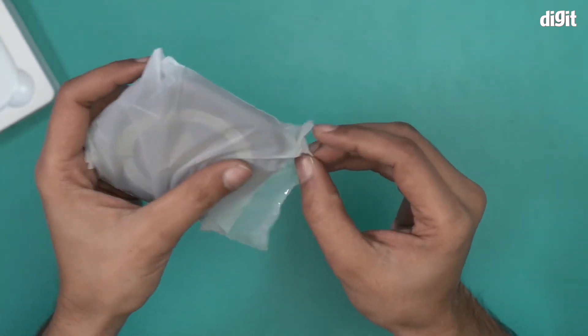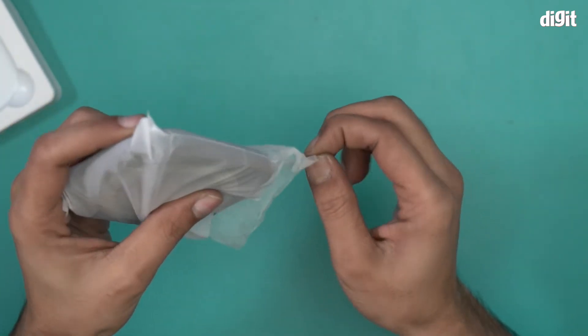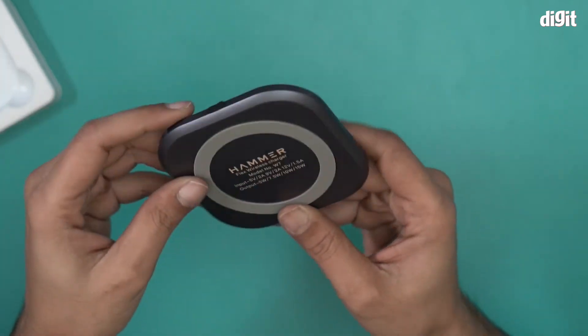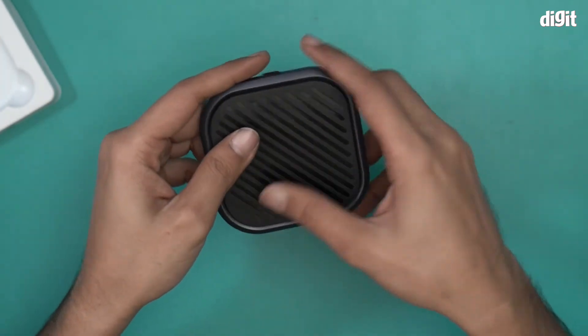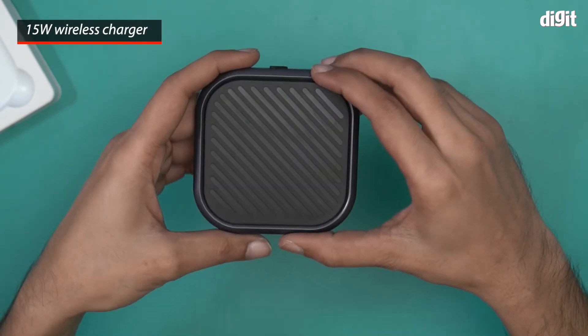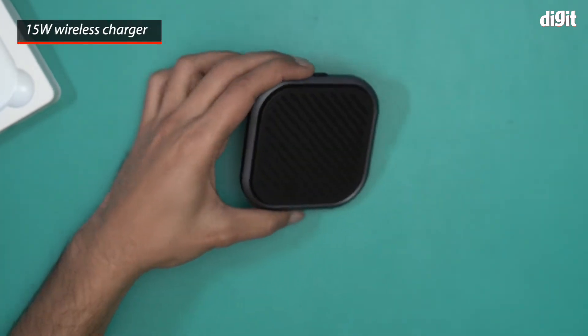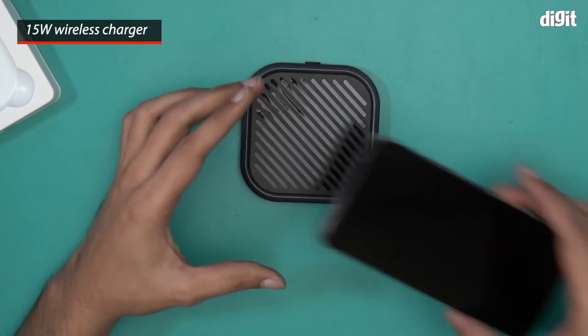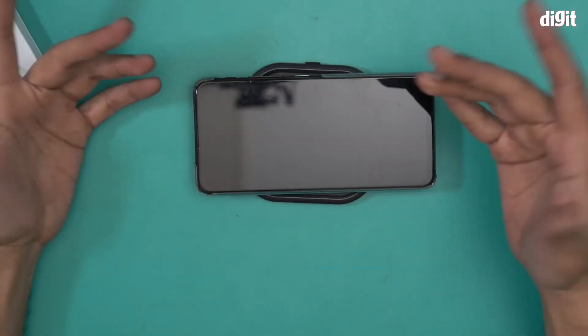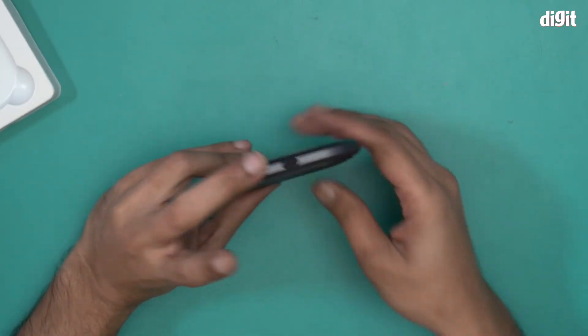Okay, there you go. This is what it looks like. This is the part that will wirelessly charge any device that you put on it. So you have to connect it to a power source, charge it, and then when you put a phone on it, it should start charging automatically. That's the idea.